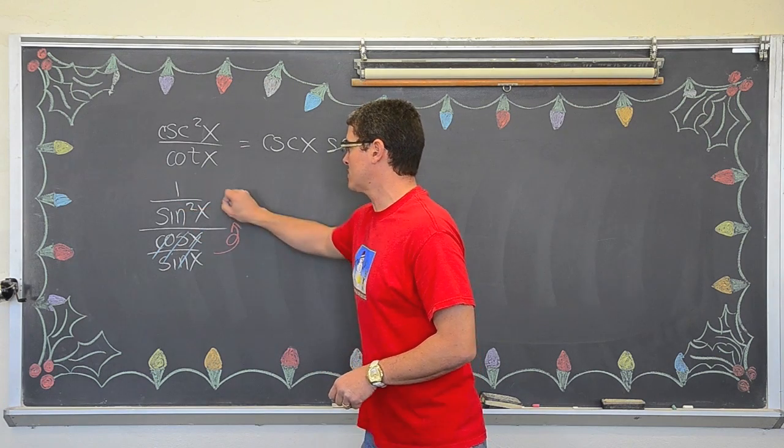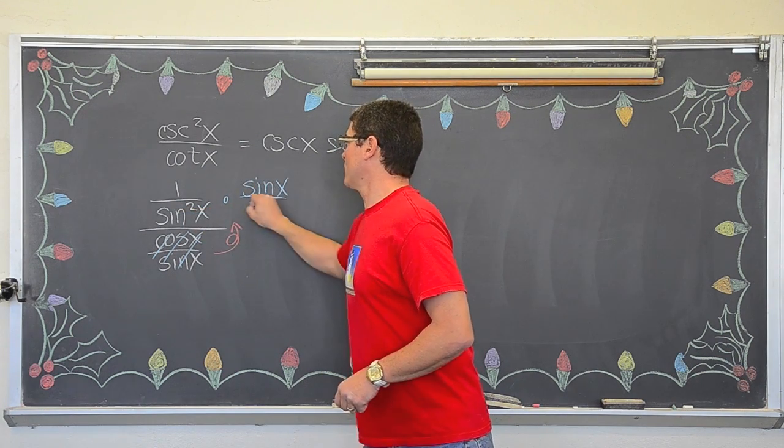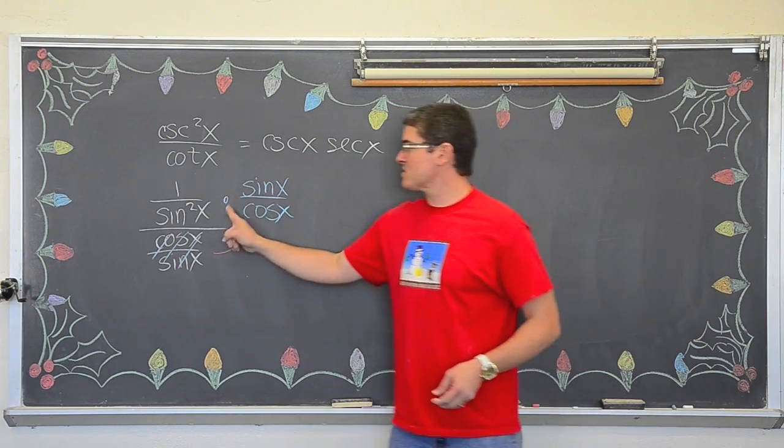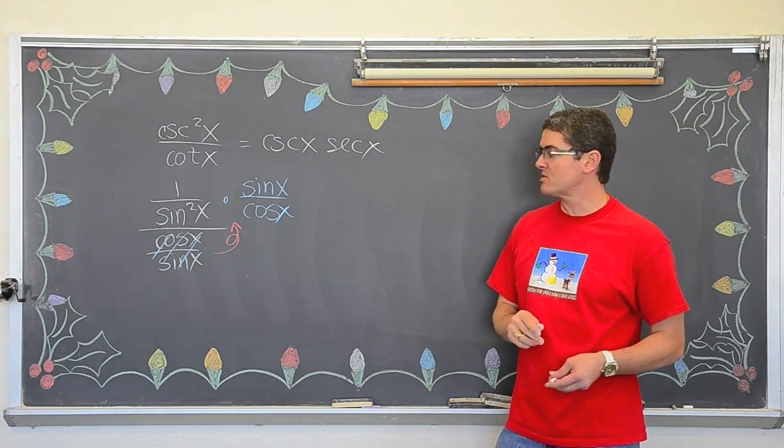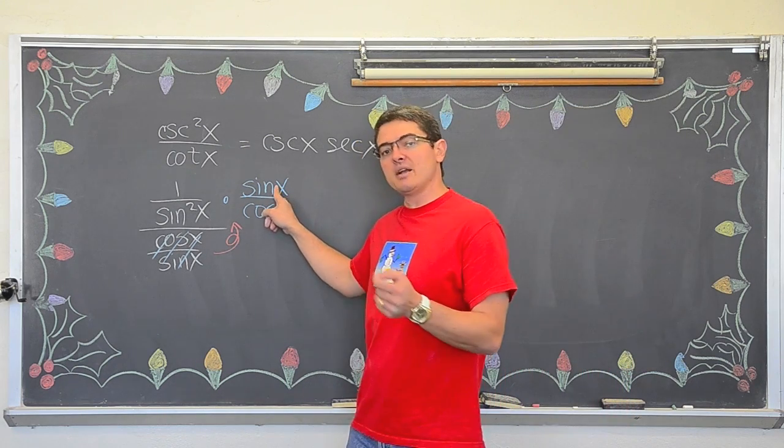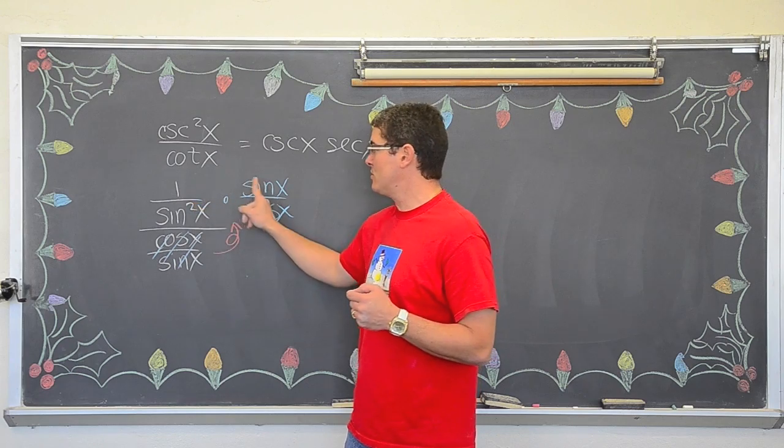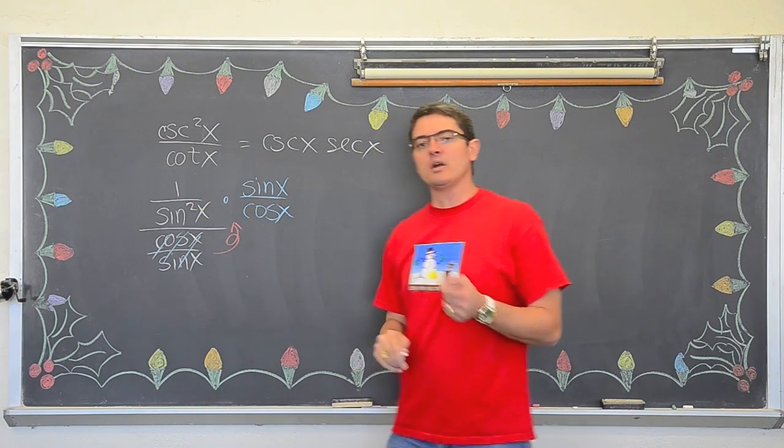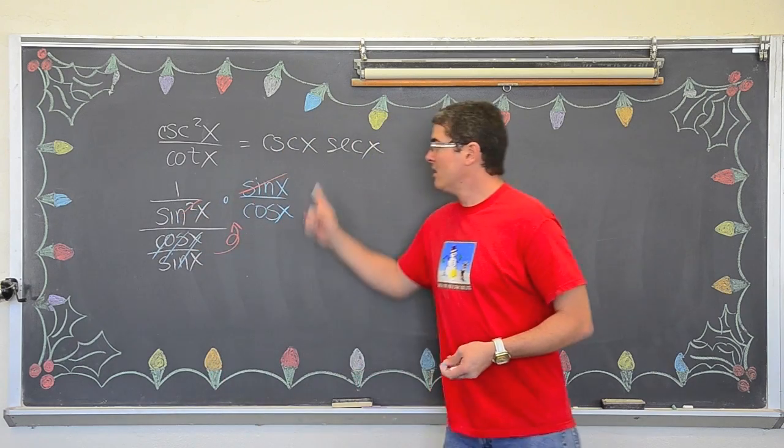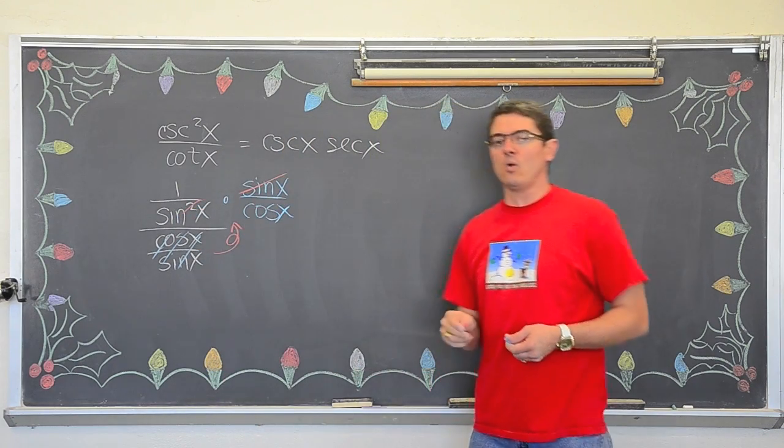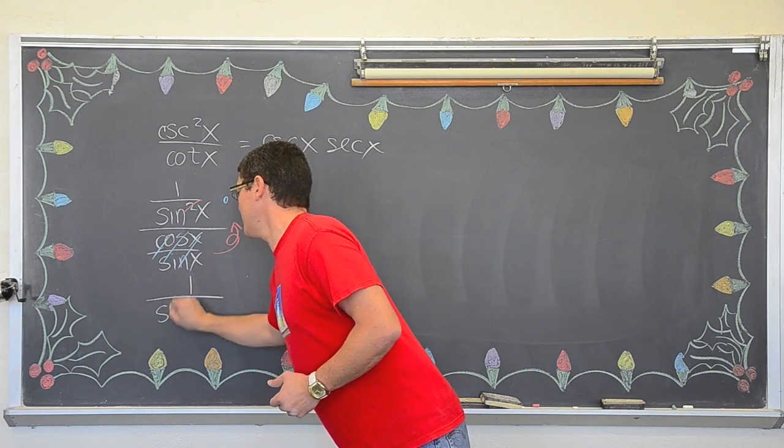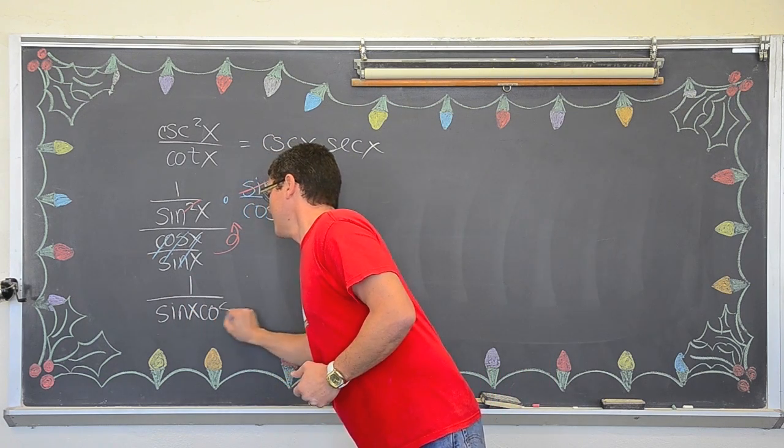Let's take a look at, we have sine to the first on top, we have sine to the second on the bottom. When you divide like bases, what do you do with those exponents? Or you might just be saying, come on man, go ahead and just cancel those out. Now, the one sine on top will cancel with one of the two sines on the bottom, giving us one over sine x cosine x. And, one over sine is cosecant.